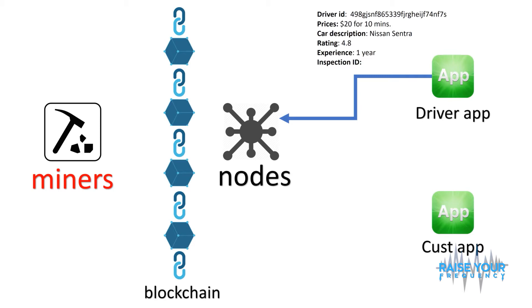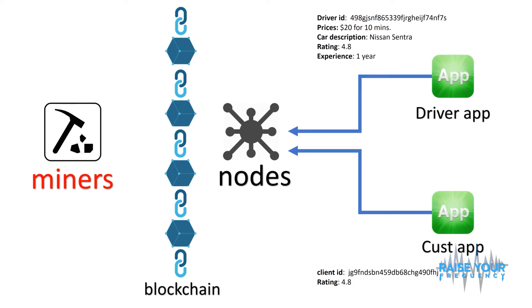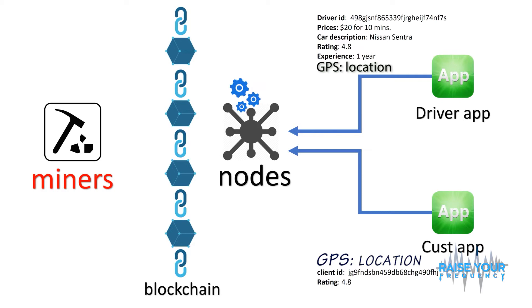So that information gets sent to the nodes — the nodes know the driver ID and related info. Then the customer says he needs a ride, and that gets sent to the nodes too: the customer ID, and maybe a customer rating where the driver rates the customer — high rating for a big tip, lower rating otherwise. Those are just suggestions. Also important: the driver's GPS location and the customer's GPS location are also sent to the nodes.